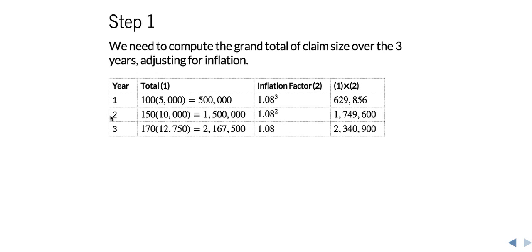Now going back a year to year 2, we now have two years of inflation, right? We have inflation going from year 2 to year 3, and then we have inflation going from year 3 to year 4. So our inflation factor here is 1.08 raised to the second power. And similarly, the same logic applies for the 1.08 raised to the third power here. Now, we simply multiply our unadjusted totals by the inflation factor to get our adjusted total claim sizes per year. Then we want to sum the last column to get the grand total of claim amounts over the 3 years. That gets us this 4.7 million.